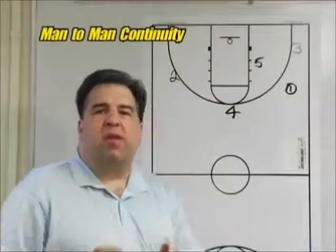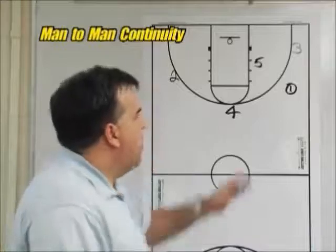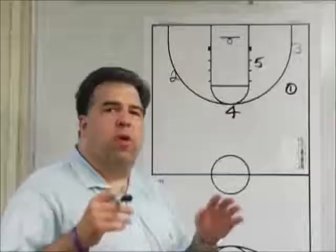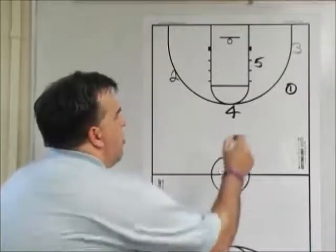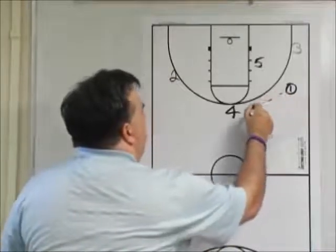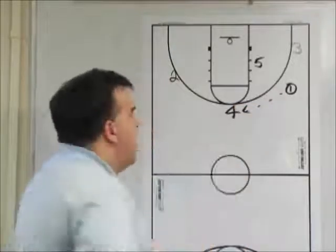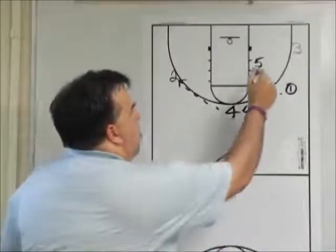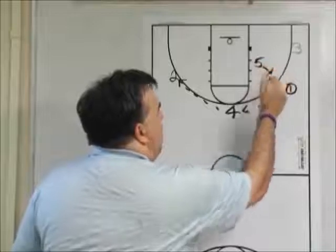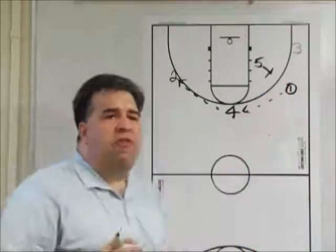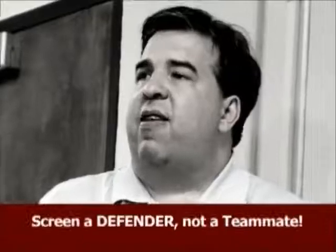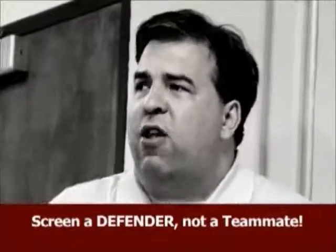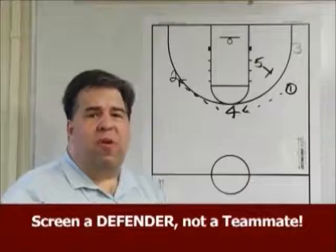Now let's talk about the basic pattern against a man-to-man defense. We've got the ball set up in the high-low triangle. We haven't been able to get the ball inside to five, so we're going to reverse it and get into the continuity portion. Anytime the ball is swung from one side to the other — one making a pass to four, now four passing to two — on the air time of the ball, as soon as the ball leaves the hands of four, we want our five-man to step out and set a back screen on one's defender. We always want to emphasize that we set a screen on a person with a different colored jersey — we don't want to screen our teammate, we want to screen the defense.